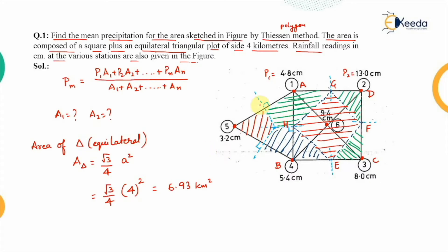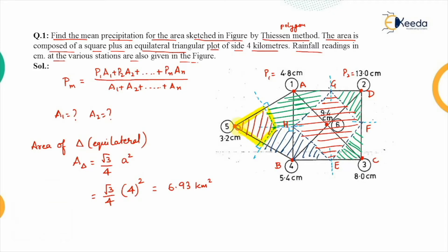When perpendicular bisectors are drawn on all three sides of the triangle, it is divided into three equal parts. Corresponding to station five, the area covered is one-third of the triangle's area. Dividing 6.93 by 3, we get the area for station five as 2.3 square kilometers.